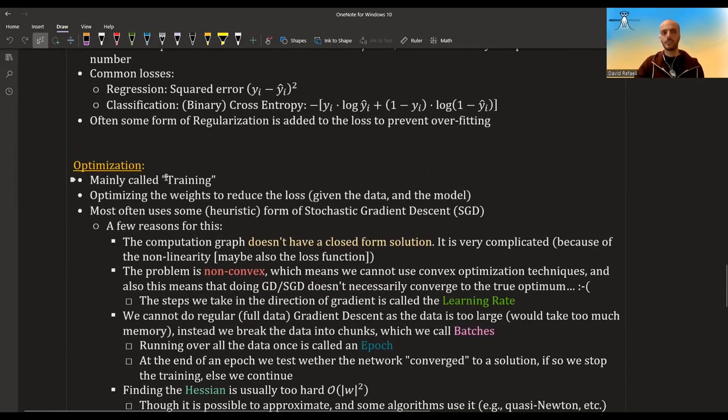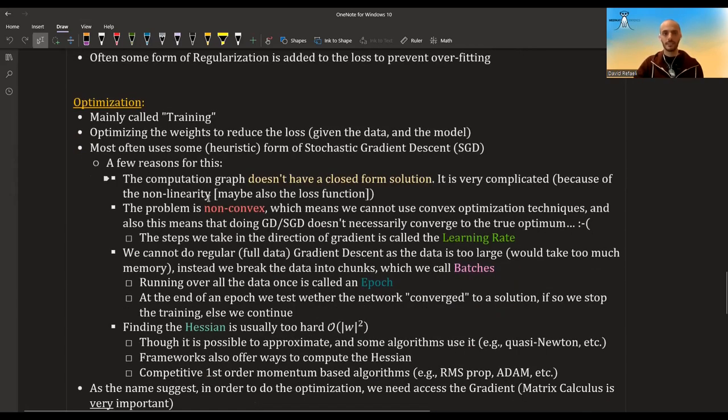This is usually called training, but what it actually is, is optimizing. We want to optimize this objective function, this loss, given our data and given the model, and the knobs that we can turn are the weights. The most often optimization algorithm that is used is stochastic gradient descent, usually some heuristic form of it with momentum. There are a few reasons for this. The obvious reason is that this neural network usually, if it's complex and long enough, doesn't have a closed form solution. If it had a closed form solution, we would prefer just to solve it and get the perfect weight, but it doesn't. It's too complicated. Another problem is that it's also non-convex. Because of all this non-linearity that we added, it's not convex, which also means that using gradient descent or stochastic gradient descent does not guarantee us to converge to the true solution. We could get stuck on what is called local minima and not get out of it.